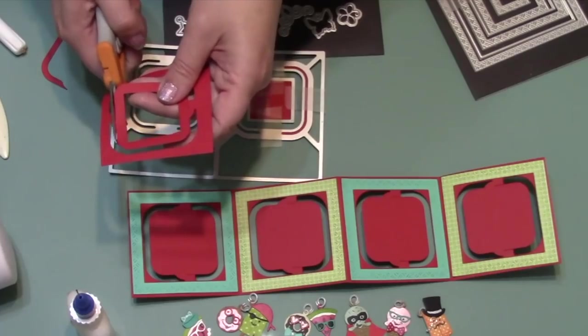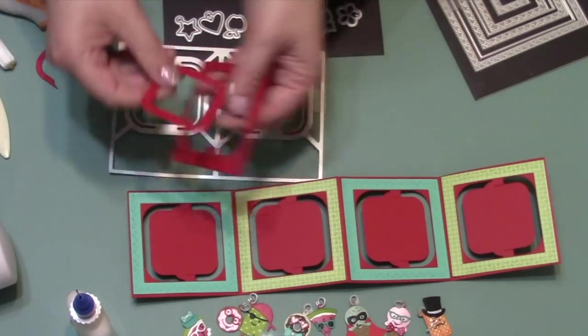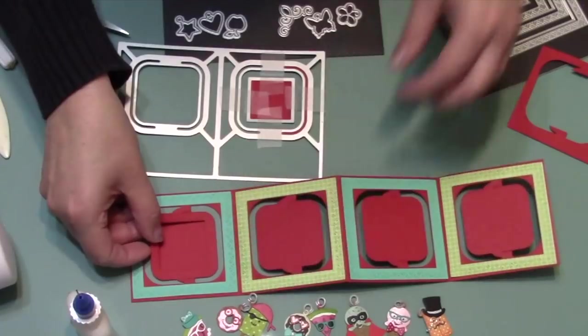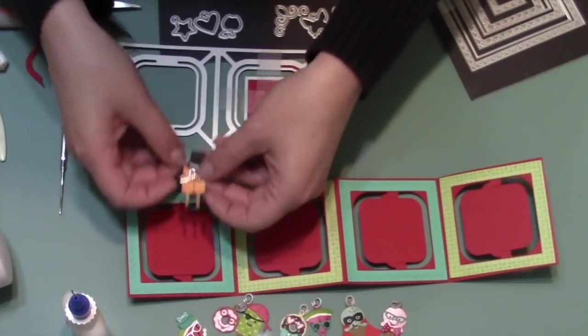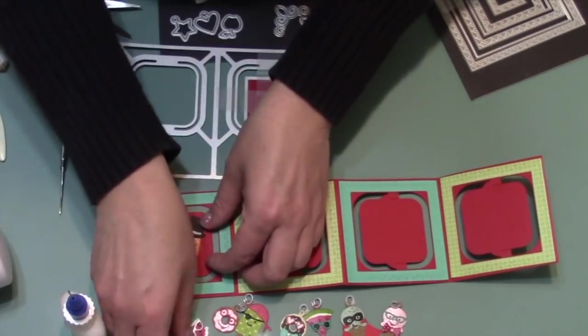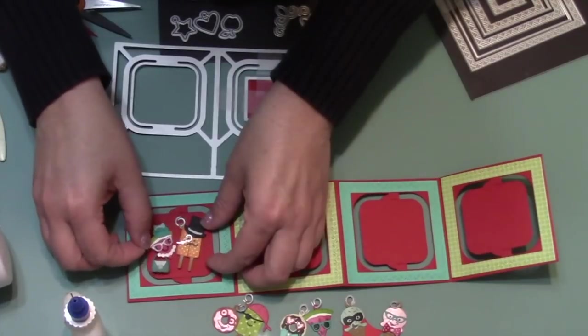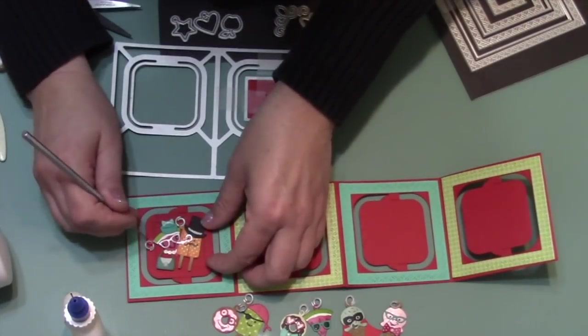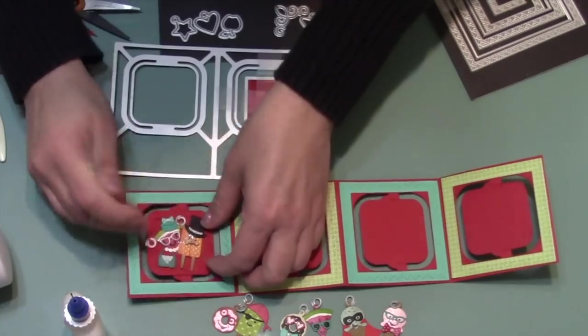So I'm just placing that frame on my project for a second so that I can see where the jump rings, the little paper jump rings on my charms, will hit that frame. Then I just mark that with a paper piercer so that I can add holes to the frame and be able to weave those paper jump rings through.